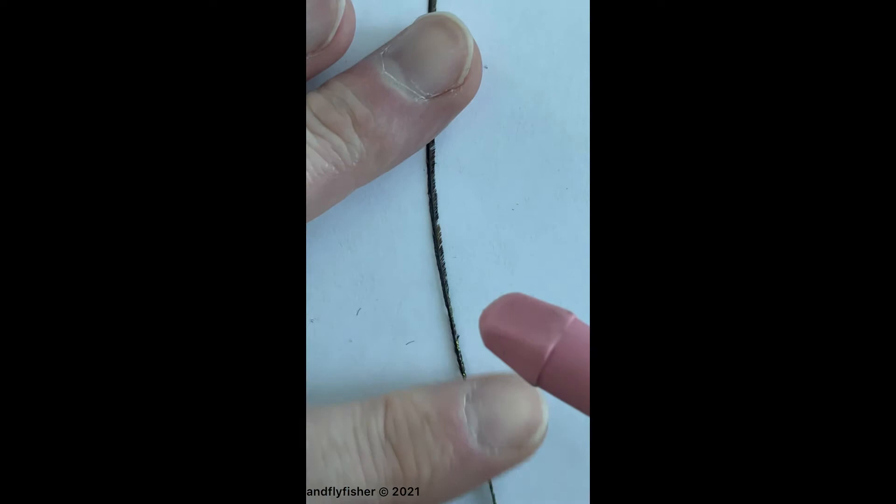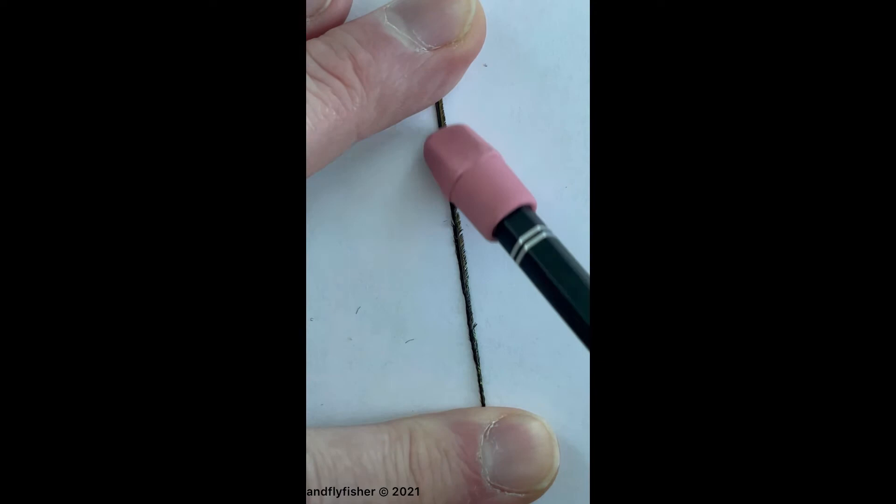What you're going to do is take the eraser and run it down on the feather.